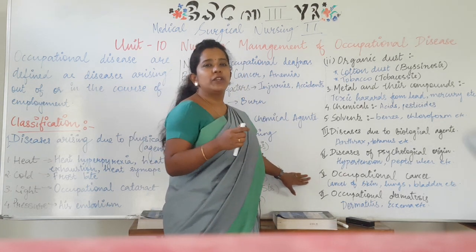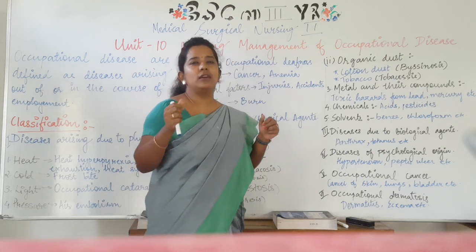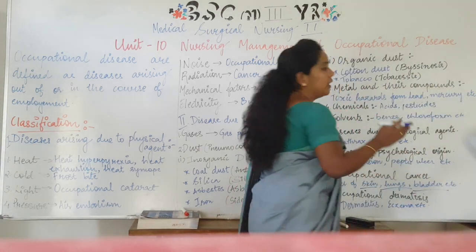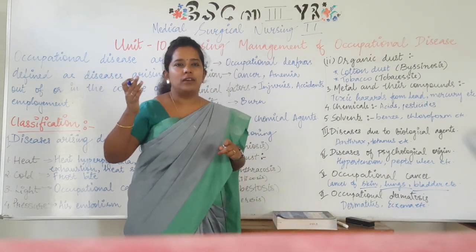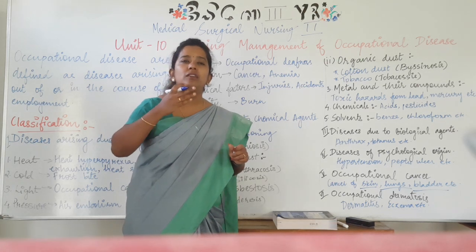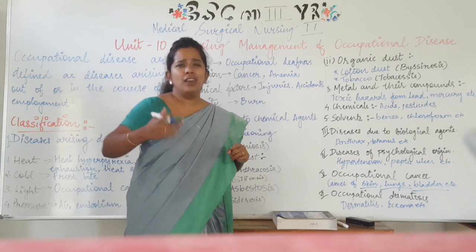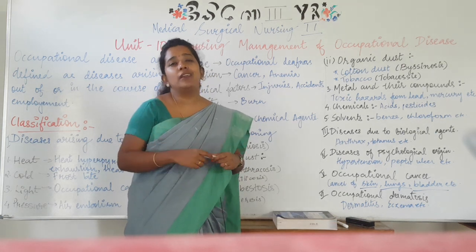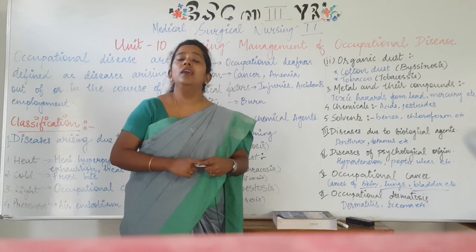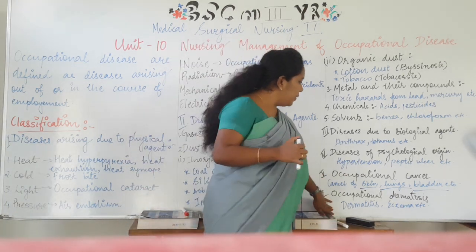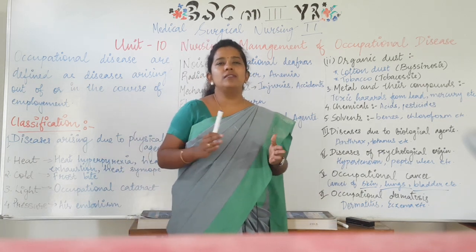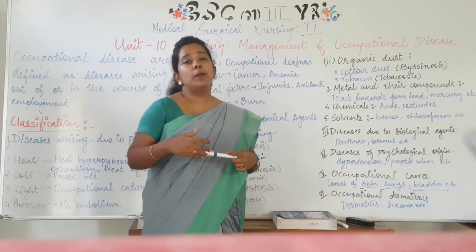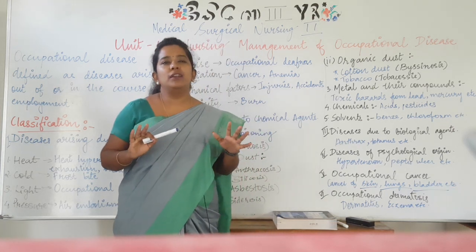Next is occupational cancer — working in a particular area can lead to cancers of the skin, lungs, or bladder. It is not limited to just these; it can also be cancer of bones or any other part. Those working in radiation areas or with certain chemicals have high chances of developing cancer in particular organs. The last category is occupational dermatosis — skin-related disorders such as dermatitis, eczema, and purpuric rashes all come under occupational dermatosis.